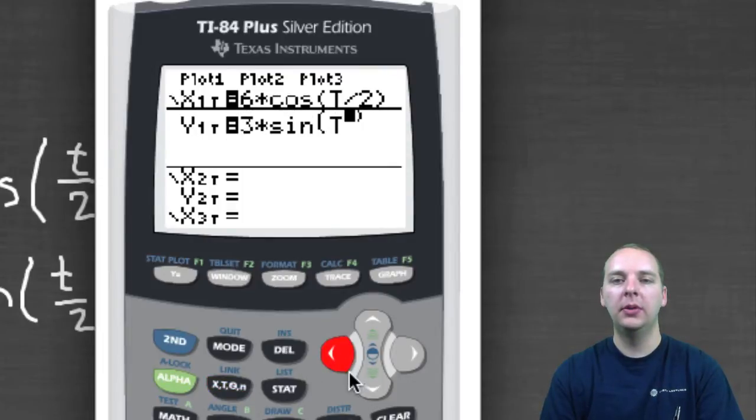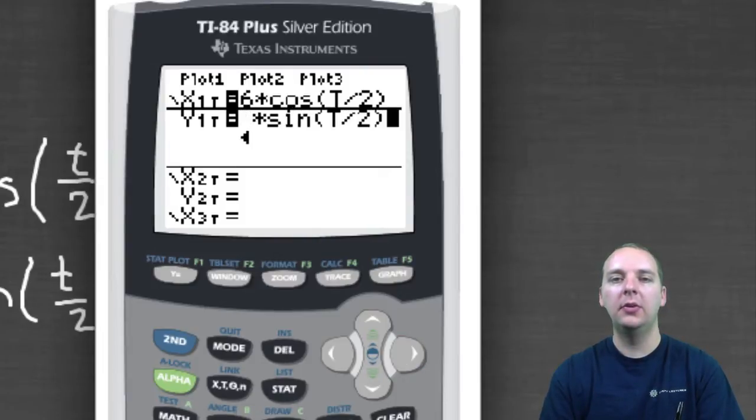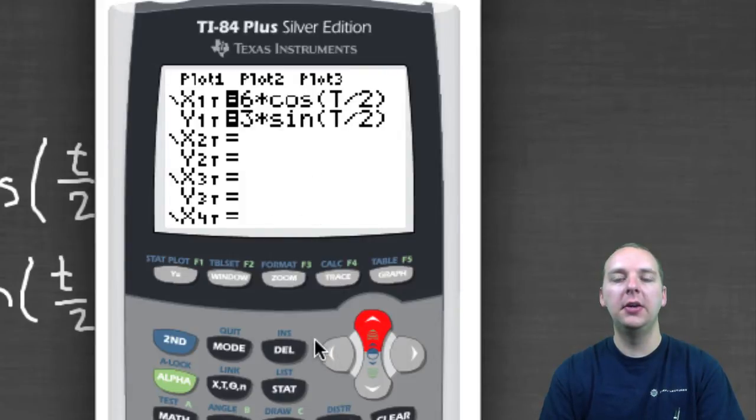Oh, sorry, typo, let's try that again. Sorry about that, T divided by 2, not an exponent, but divided by 2. Alright, so here's my two parametric guys listed here and here.